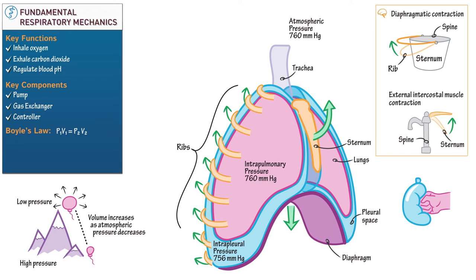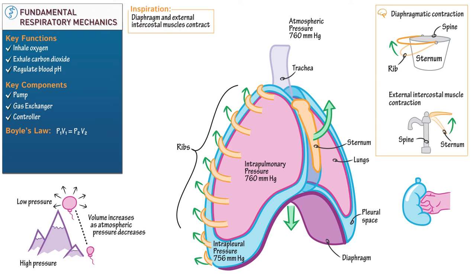Returning to our thoracic cavity — to summarize, during inspiration the diaphragm and external intercostal muscles contract to increase thoracic volume, as the arrows in our illustration indicate. Inspiration is an active process requiring muscle contraction. As thoracic volume increases, intrapulmonary pressure decreases to below atmospheric pressure, creating a pressure gradient that facilitates inhalation. Air moves down this pressure gradient, flowing from the atmosphere through the trachea and into the lungs — from higher to lower pressure.